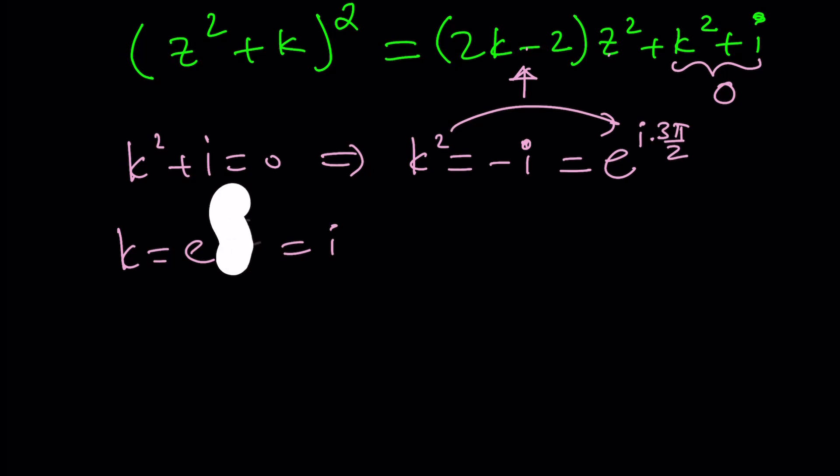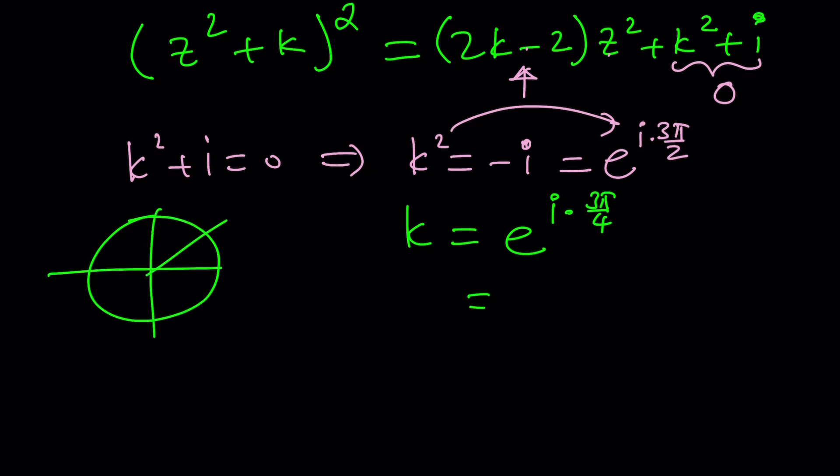So when you cut in half, let's do it correctly. e to the power i times 3 pi over 4. And 3 pi over 4, if you think about it, cosine is negative, sine is positive. So it's going to be like negative root 2 over 2 plus root 2 over 2 i.